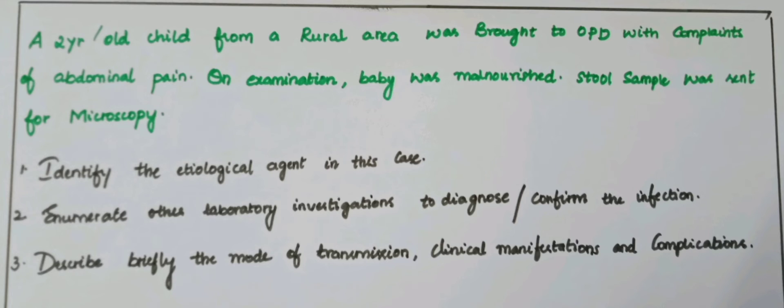Serology: antibodies detected by ELISA, IFA (indirect fluorescence antibody test), and IHA (indirect hemagglutination test).